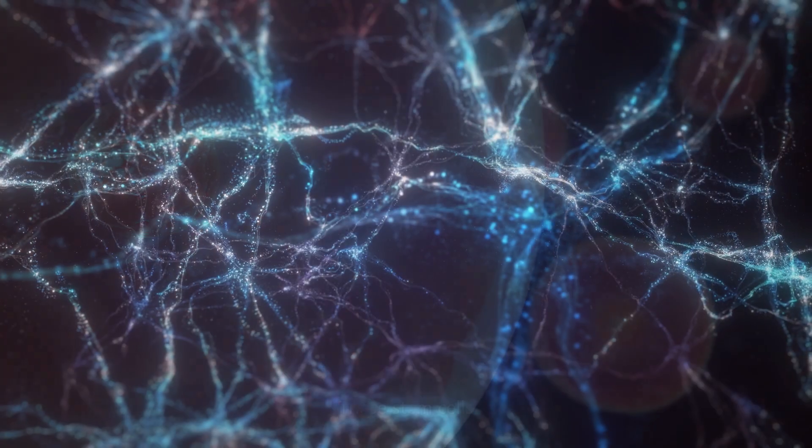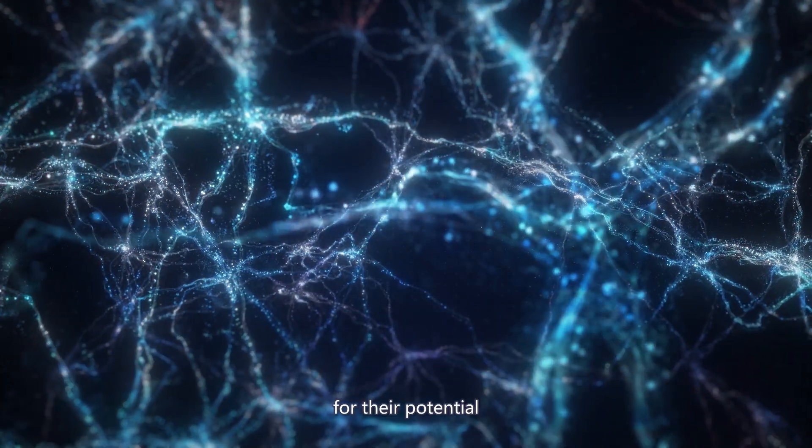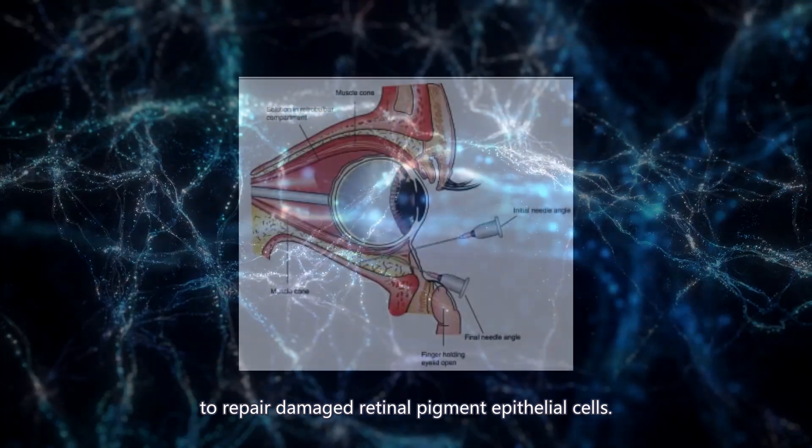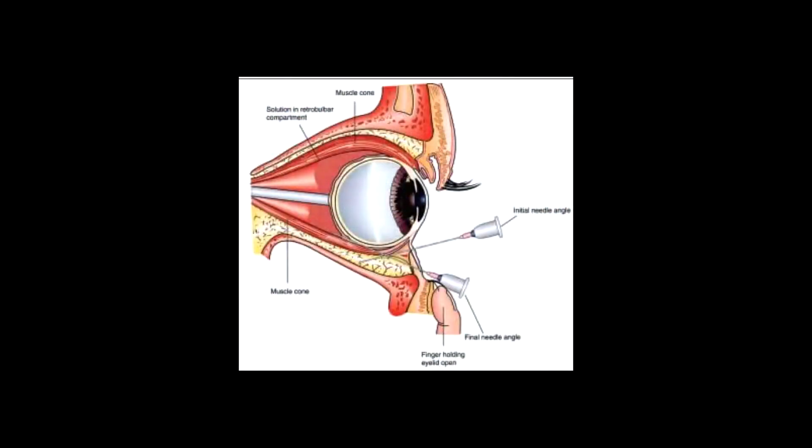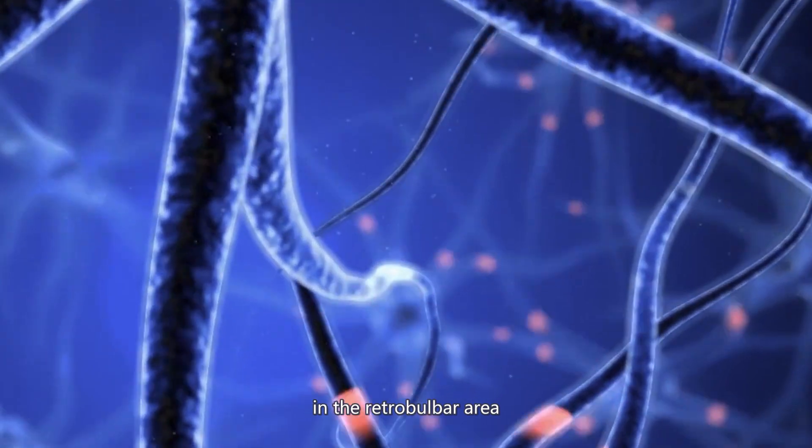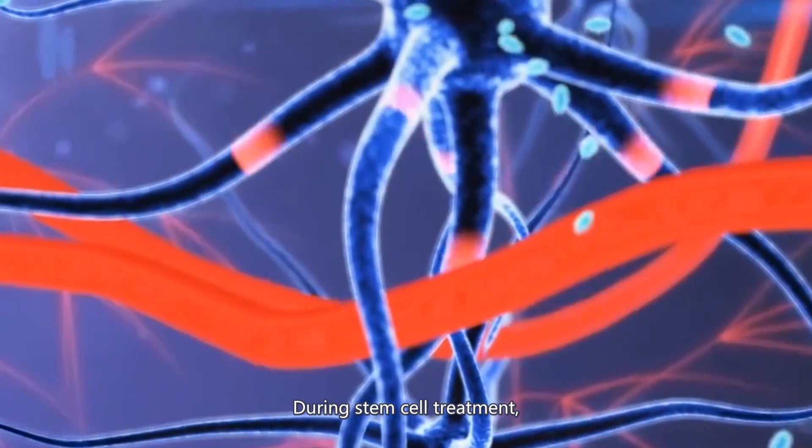These stem cells are presently being investigated for their potential to repair damaged retinal pigment epithelial cells. Retrobulbar injections are usually used worldwide to provide local anesthesia in the retrobulbar area during stem cell treatment.